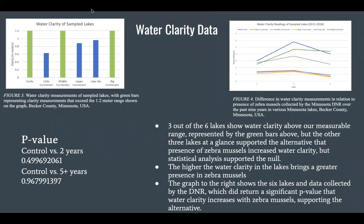Here we have two graphs representing the water clarity of the sampled lakes. The figure on the top left has green bars and blue bars — the green bars represent water clarity measurements that exceed the 1.2 meter range that our equipment was able to measure, so this data could not be used for analysis. The data collected, though it looks like it would be significant, turns out to be statistically insignificant, as the p-values returned were 0.899 and 0.965 respectively. Though we think if our sample size was larger or if we did not have equipment limitations, this would definitely be a great indicator of zebra mussel effects on water quality, and it would be interesting to do further research to discover the time frame in which zebra mussel impacts can be readily seen.